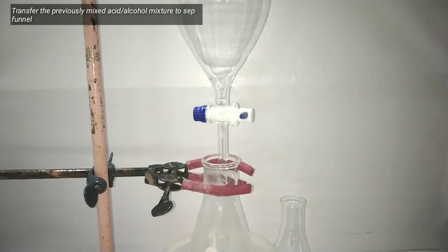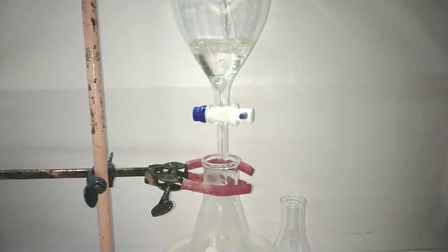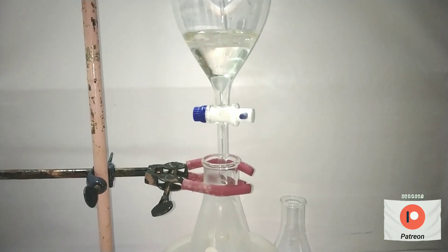Now we transfer the previously mixed cold acid alcohol mixture to the separatory funnel. In the Erlenmeyer flask below, we have the sodium nitrite solution.